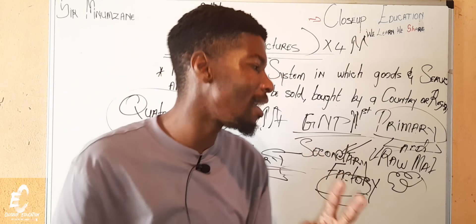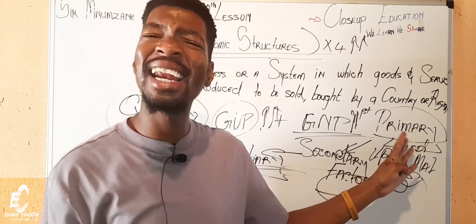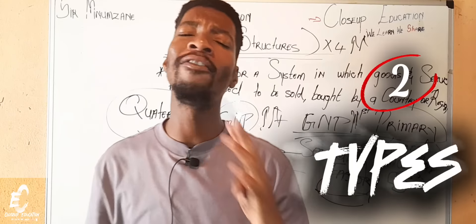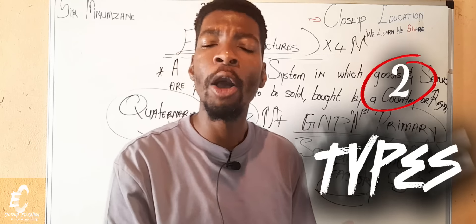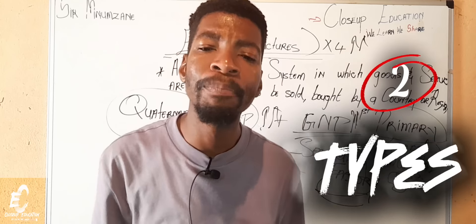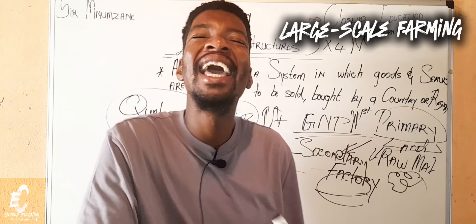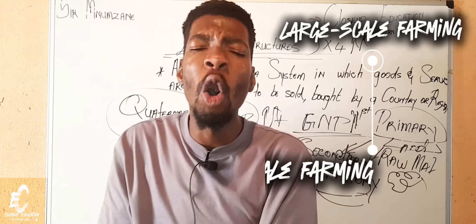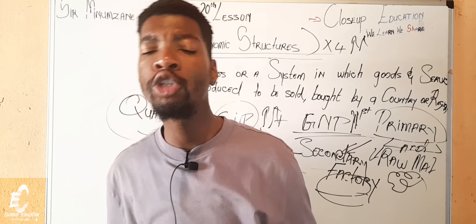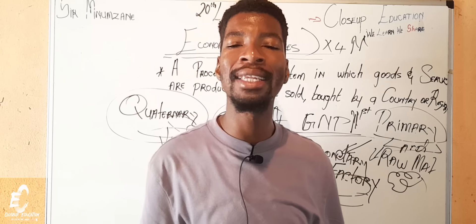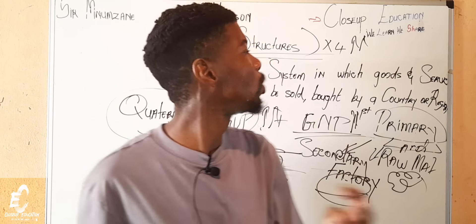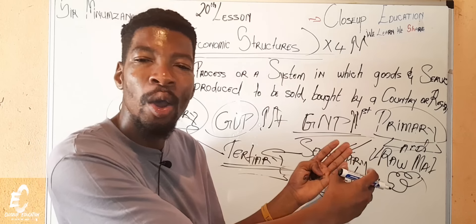We have to understand that in the agricultural sector we have two types of farming: large-scale farming and small-scale farming. That will be a topic for another day, but for now I think you definitely understand the structure.